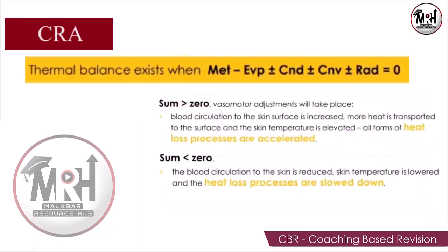Now we have the thermal balance equation. We have heat gain and heat loss. In the thermal balance equation, we account for heat from metabolism, evaporation, conduction, convection, and radiation. The equation is: Metabolism minus Evaporation, plus or minus Conduction, plus or minus Convection, plus or minus Radiation, equals zero.